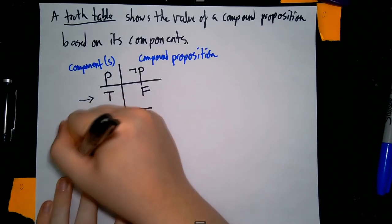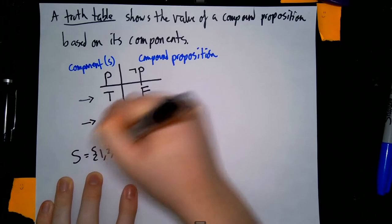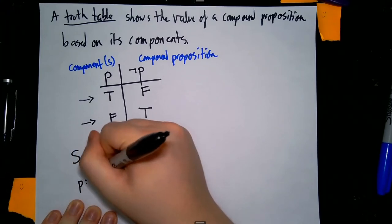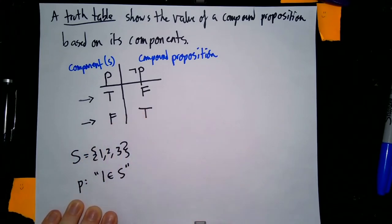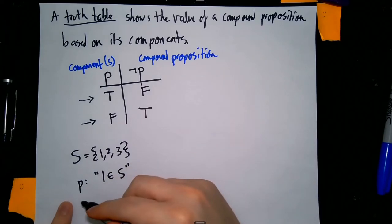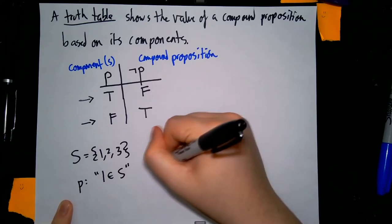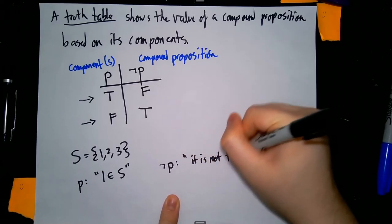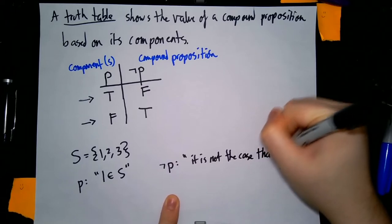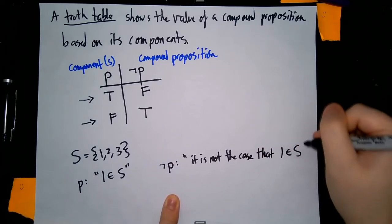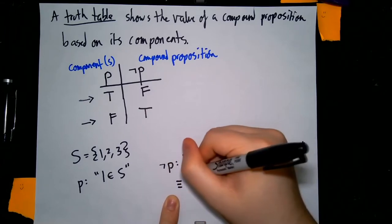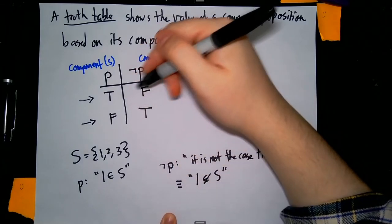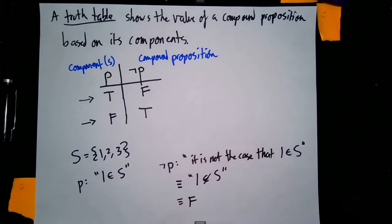As an example, take the set S = {1, 2, 3} from previous videos. If p is the proposition '1 is an element of S,' then p is a true proposition. When we look at not-p, that's the statement 'it is not the case that 1 is an element of S,' which is equivalent to '1 is not an element of S.' Referring to the truth table, this is a false statement.